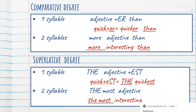Two syllables: use 'more' plus adjective plus 'than'. For example, 'more interesting than'.